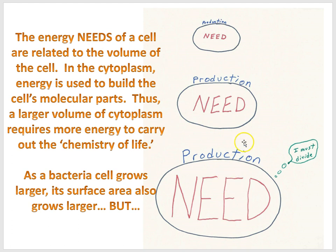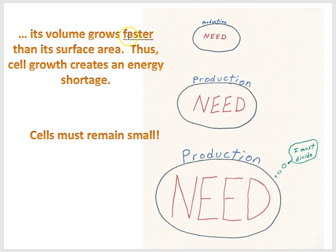As we see in this picture here, we're going to be kind of simulating what happens as the cell grows larger. Well, the production of energy will be growing larger, and so the word production is getting bigger as the cell gets bigger. But now we have the key point. As a bacteria cell grows larger, its surface area also grows larger, but its volume grows faster than its surface area.